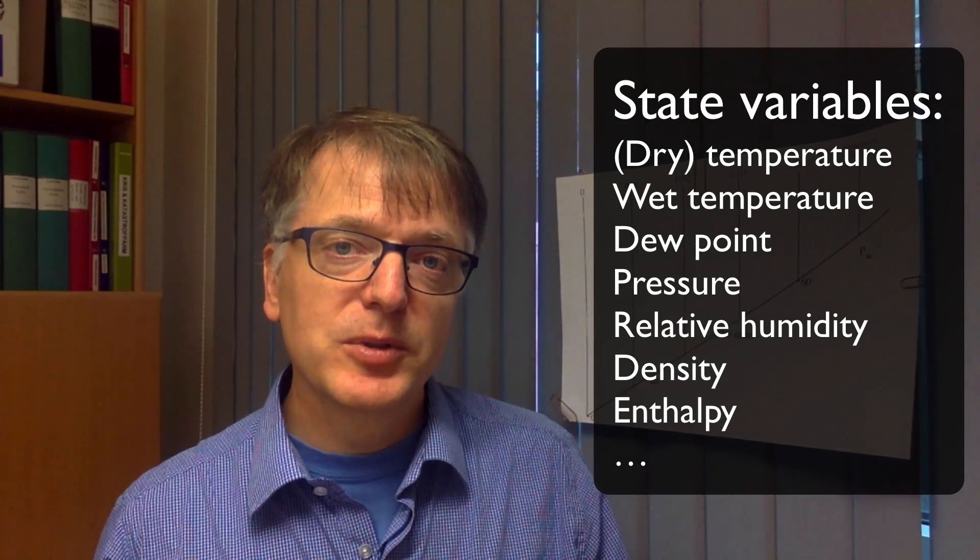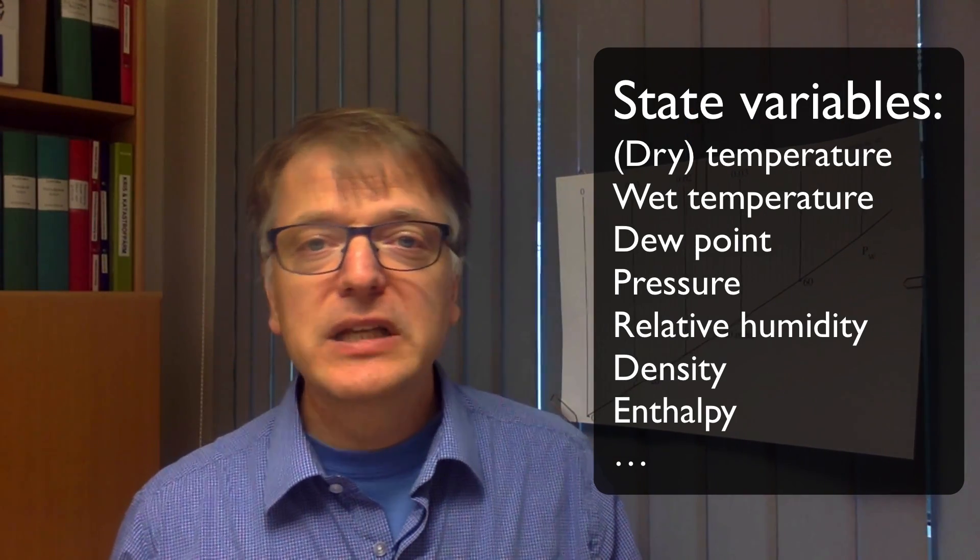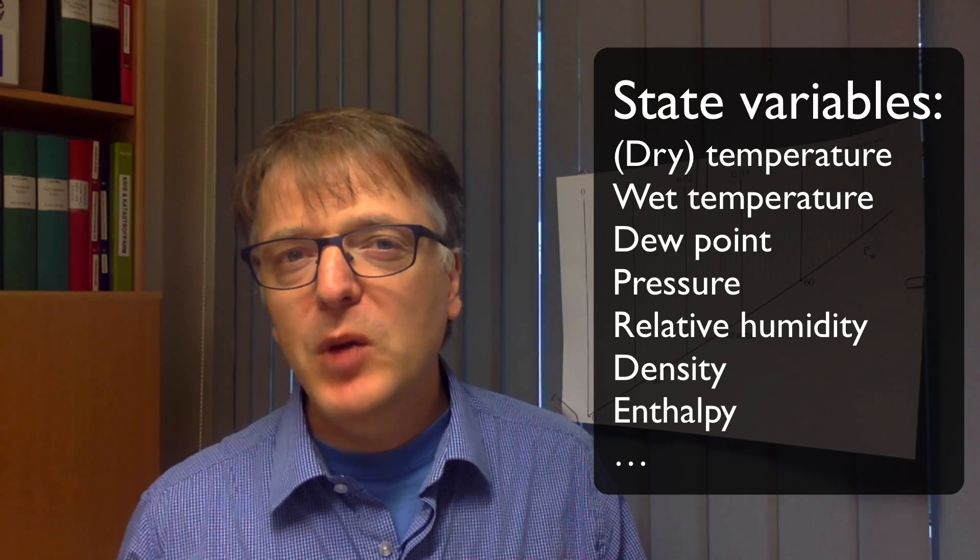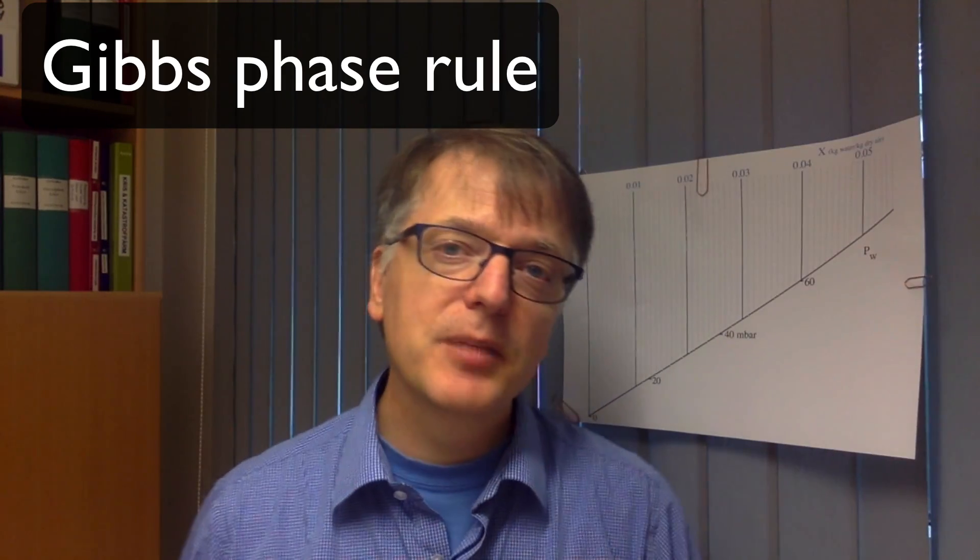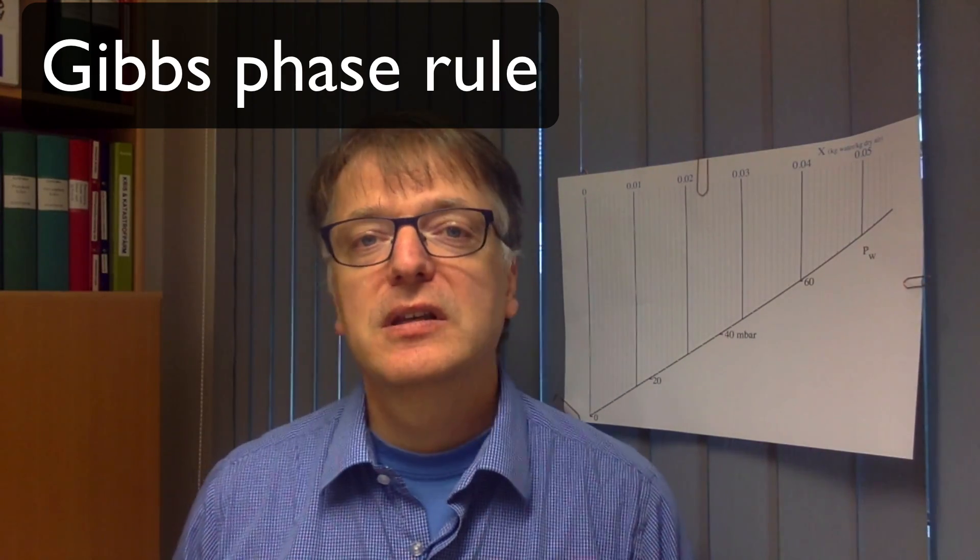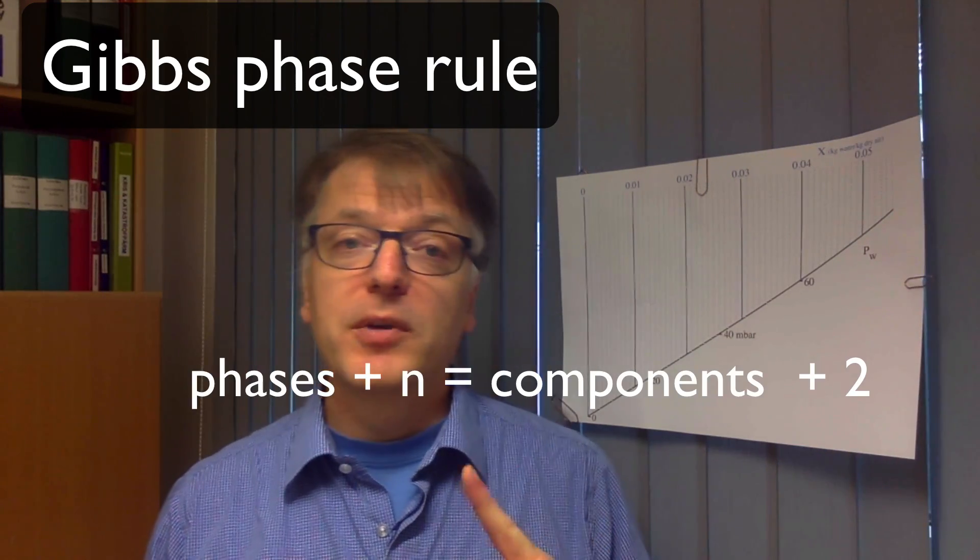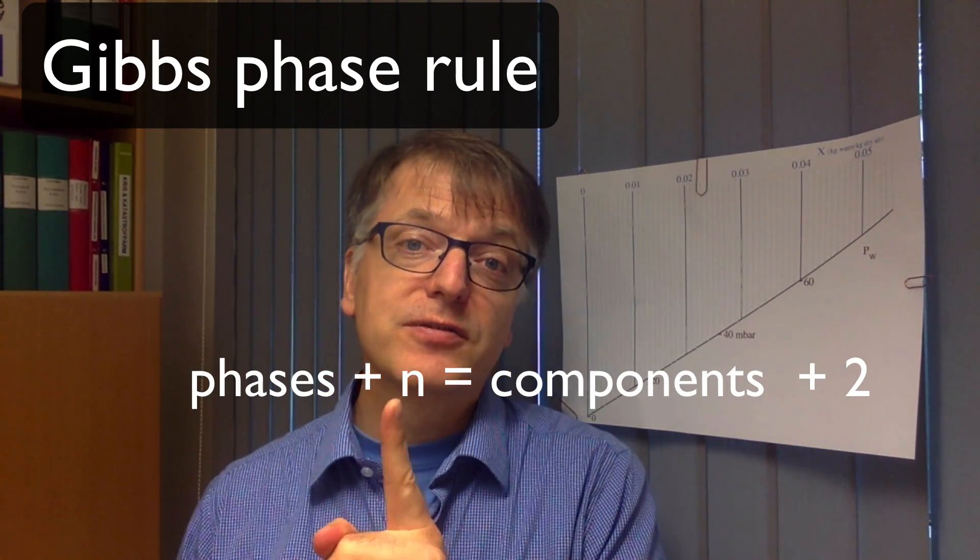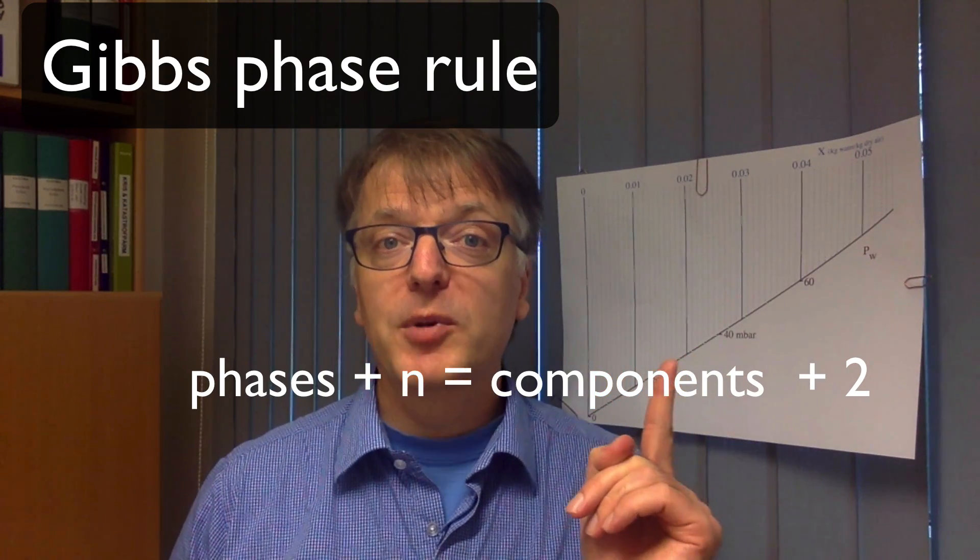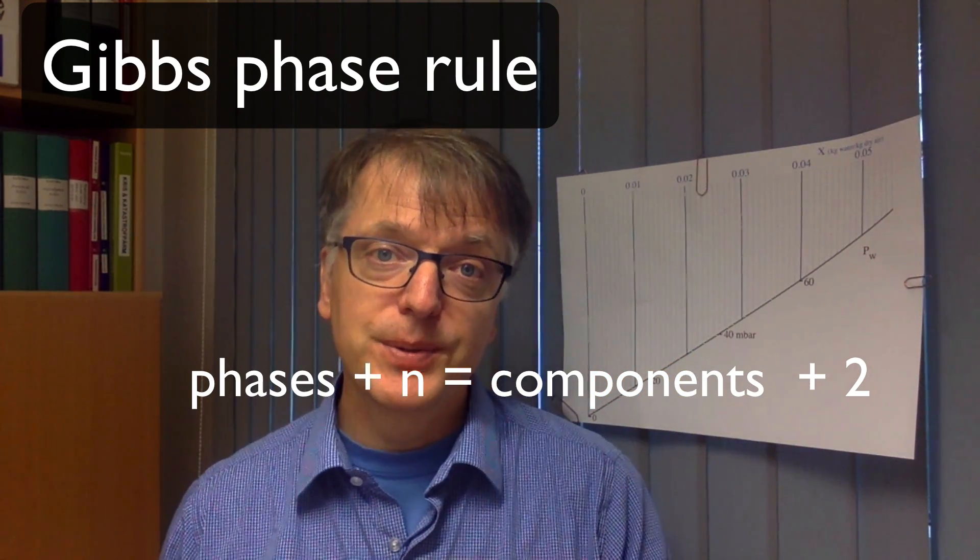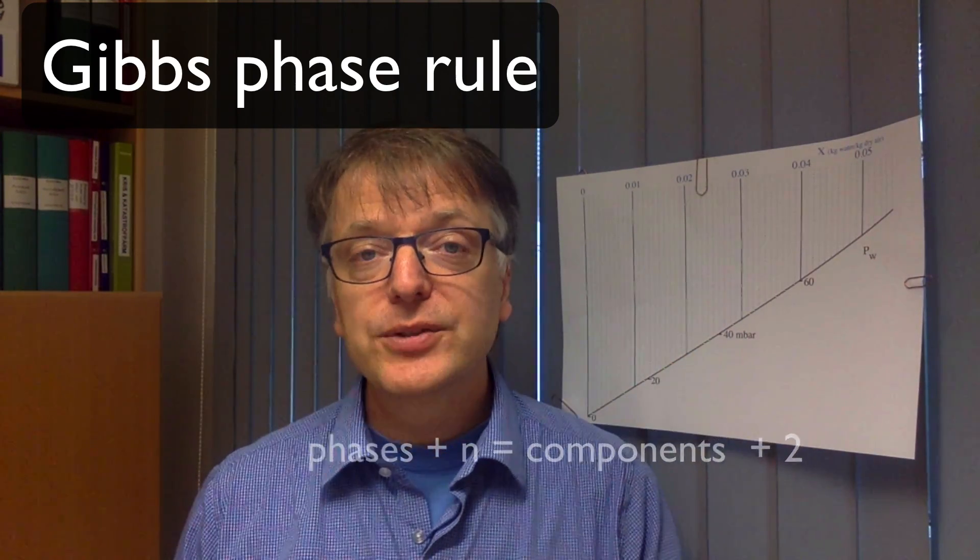All these different state variables, they are not all independent. But how many independent state variables are there? Well, you can calculate the number of independent state variables using Gibbs phase rule, which states that the number of phases plus the number of the degrees of freedom equals the number of components plus two.